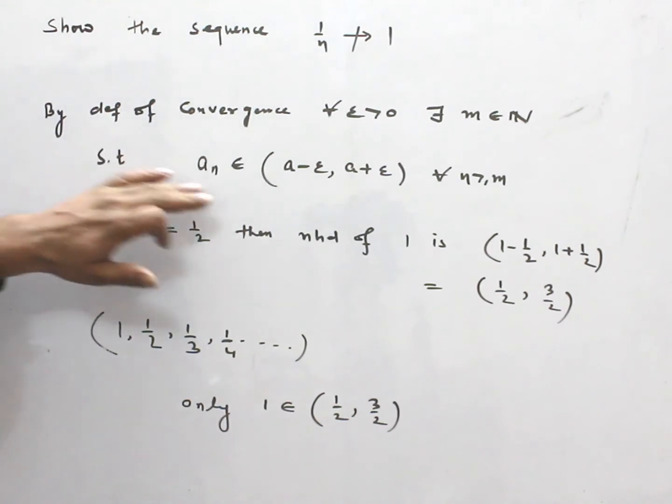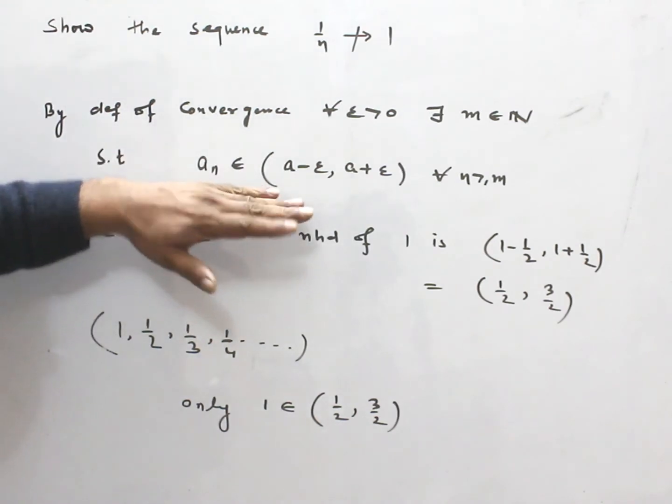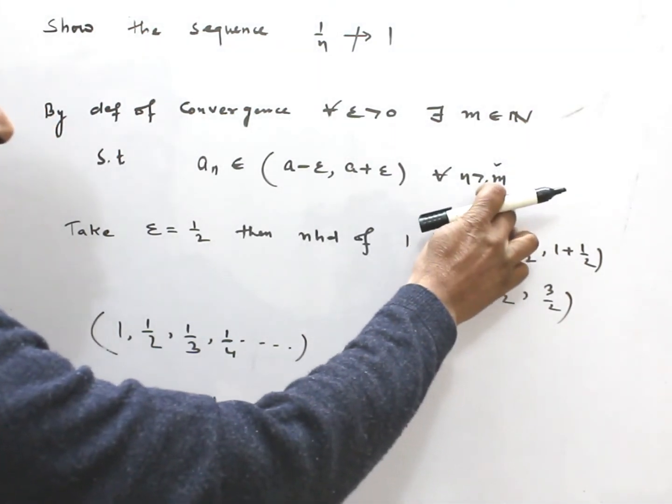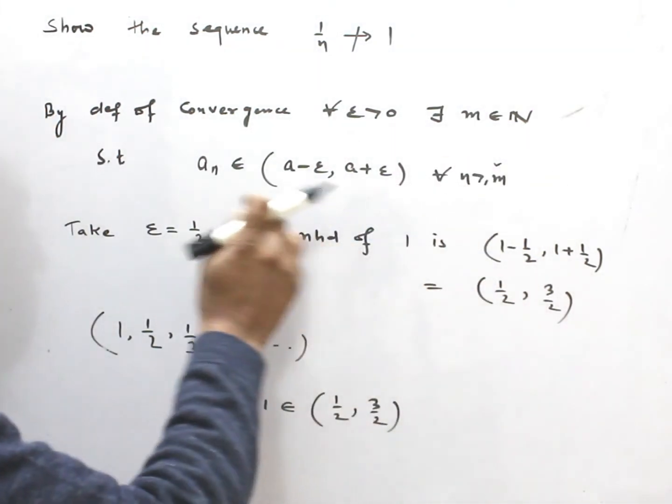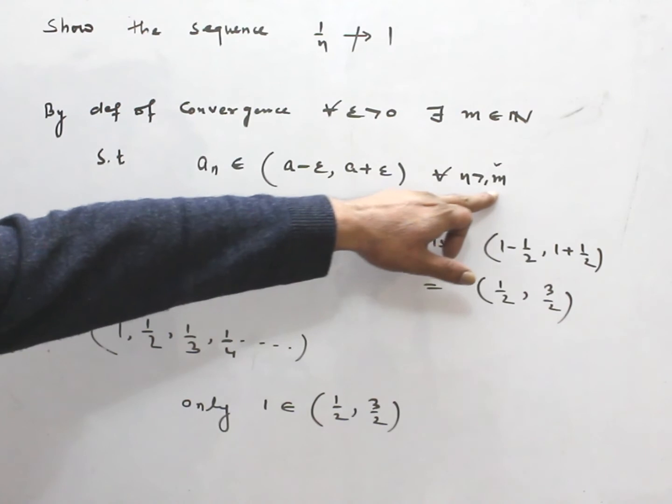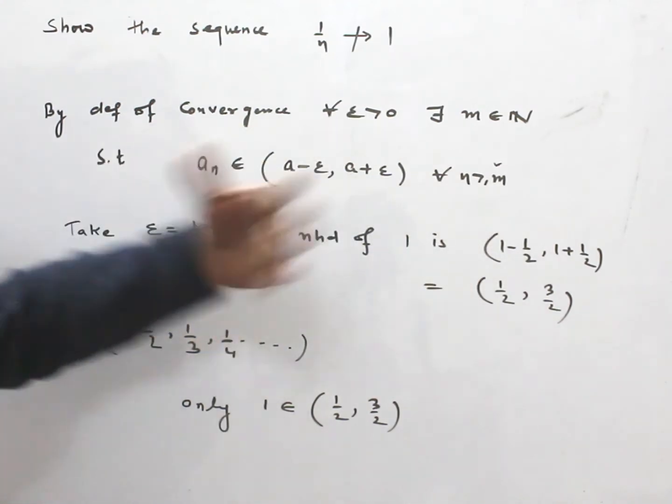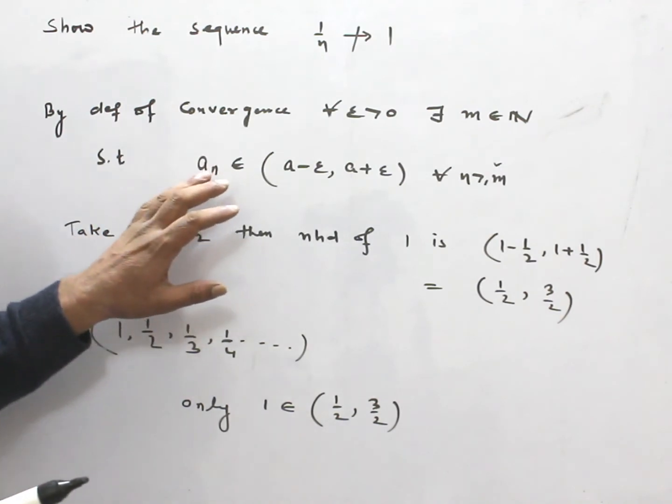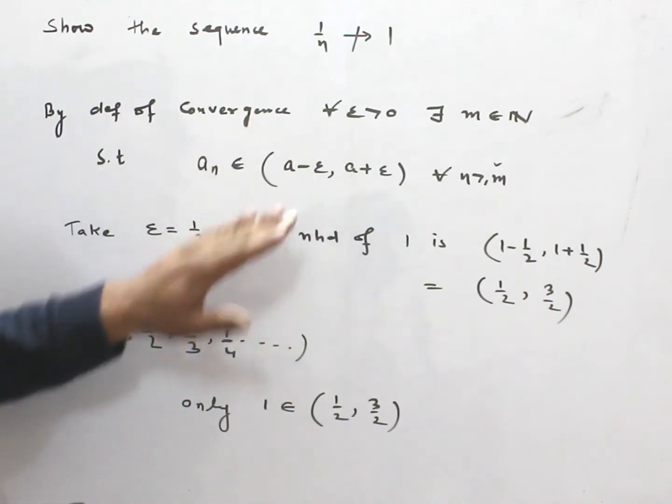But, as per our definition, all terms after m or equal to m must fall in the neighborhood. But here, because these are infinite number of terms after m, except a few terms, must fall in the neighborhood.